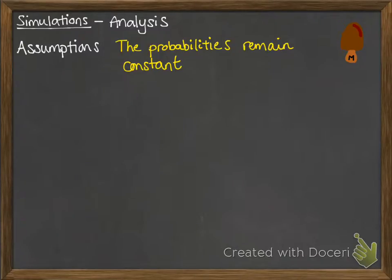The first assumption is that those probabilities remain constant — that he will always have an 80% chance of buying a magnum and a one in six chance of getting a winning stick. This means that we can generate the simulation the way that we did, so that we had the 80% chance of getting the numbers we wanted each time, or the one in six chance from rolling the dice.